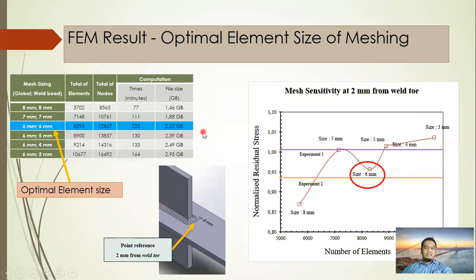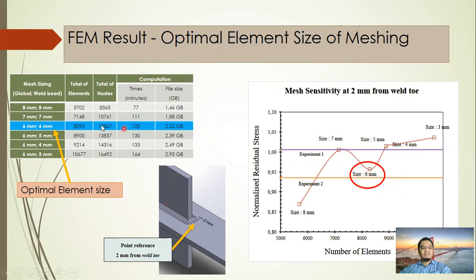Next, we determine which mesh size has the optimal element size through a mesh sensitivity study, comparing seven millimeter and six millimeter element sizes. After all calculations, we determine that the six millimeter element size is optimal, based on the reference point 2 mm from the weld, compared against the physical experimental data by Sahroni.